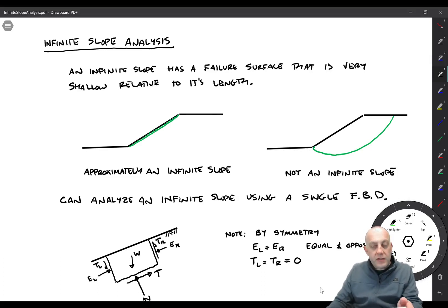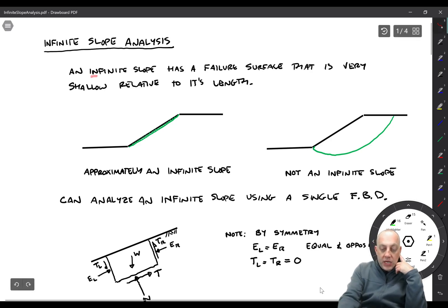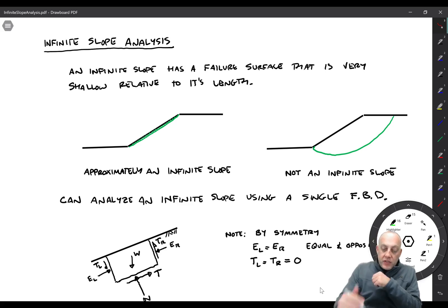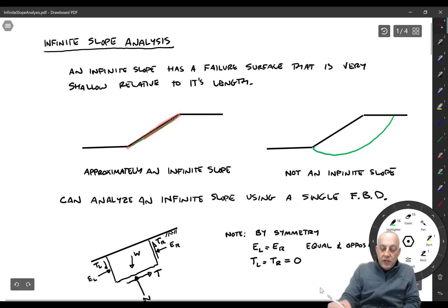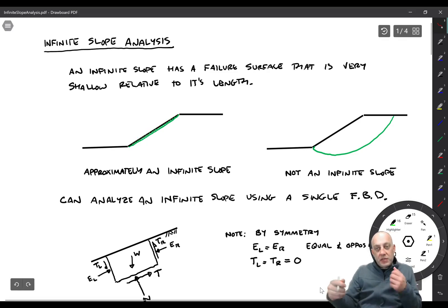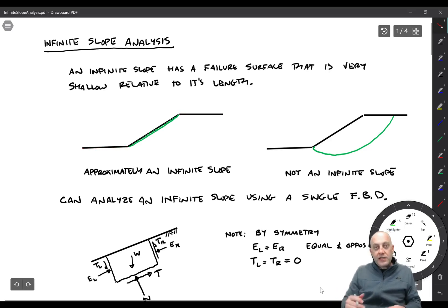The next one involves the infinite slope analysis. First, let's talk about what an infinite slope is — as the name implies, it's physically impossible to have a truly infinite slope. But if a slope has a very shallow failure surface, like this one drawn here in green, it can be approximated as an infinite slope by looking at a free body diagram in the middle of the slope, because what's happening on the left and right sides are basically the same.